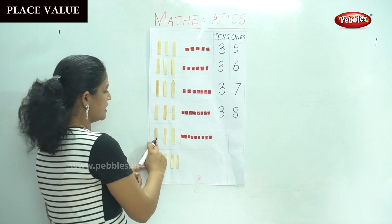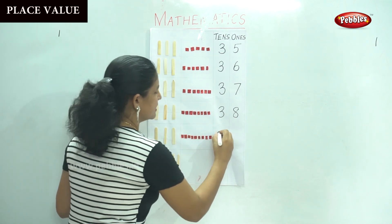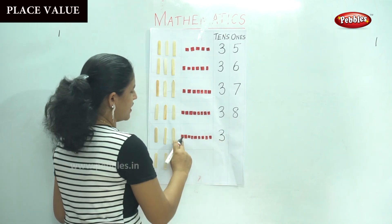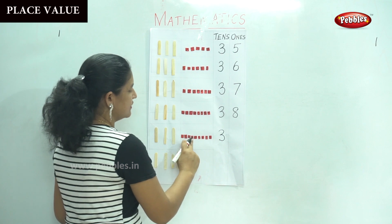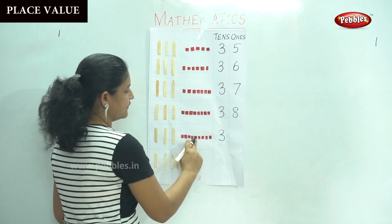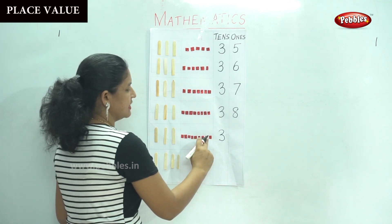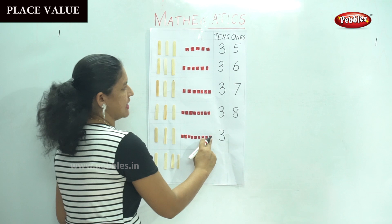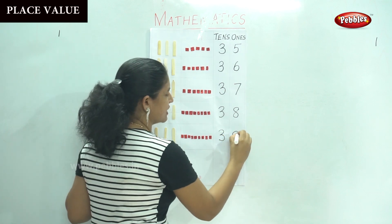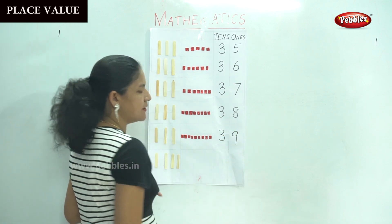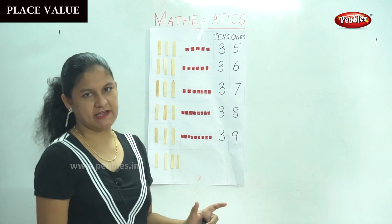Next: one, two, three — three tens. And in the ones: one, two, three, four, five, six, seven, eight, nine — nine ones, and the number is thirty-nine.